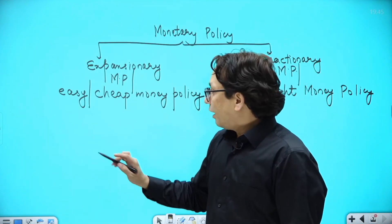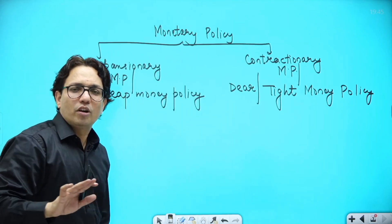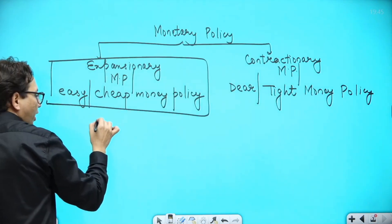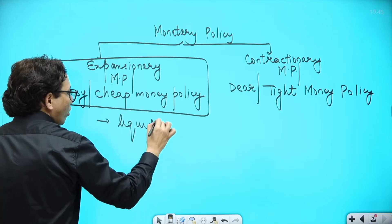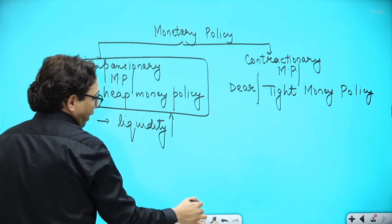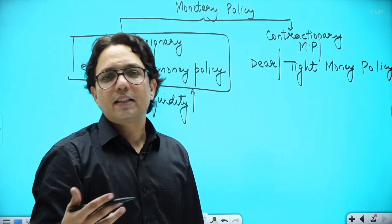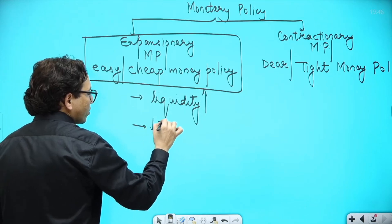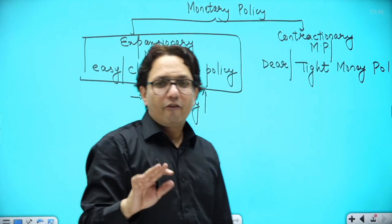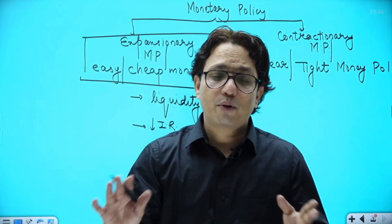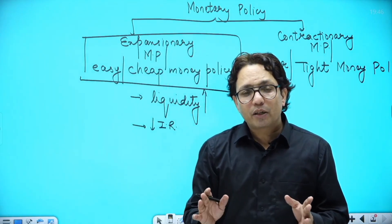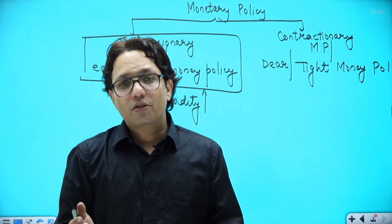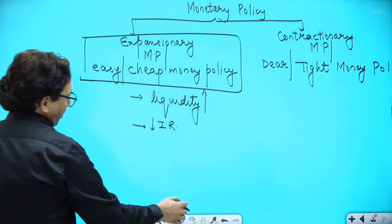In expansionary monetary policy, just as in expansionary fiscal policy, the liquidity goes up. To increase liquidity, the RBI reduces interest rates — whether it is repo rate, reverse repo rate, SLR, cash reserve ratio, lending rate, or deposit rate. When expansionary monetary policy is being followed, the RBI cuts the repo rate, reverse repo rate, SLR, and CRR, and banks cut deposit and lending rates.